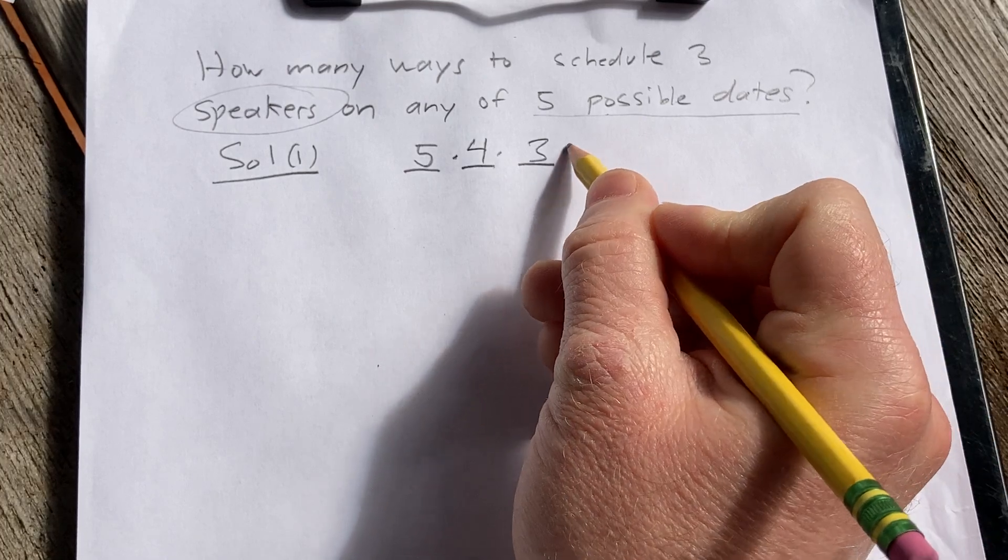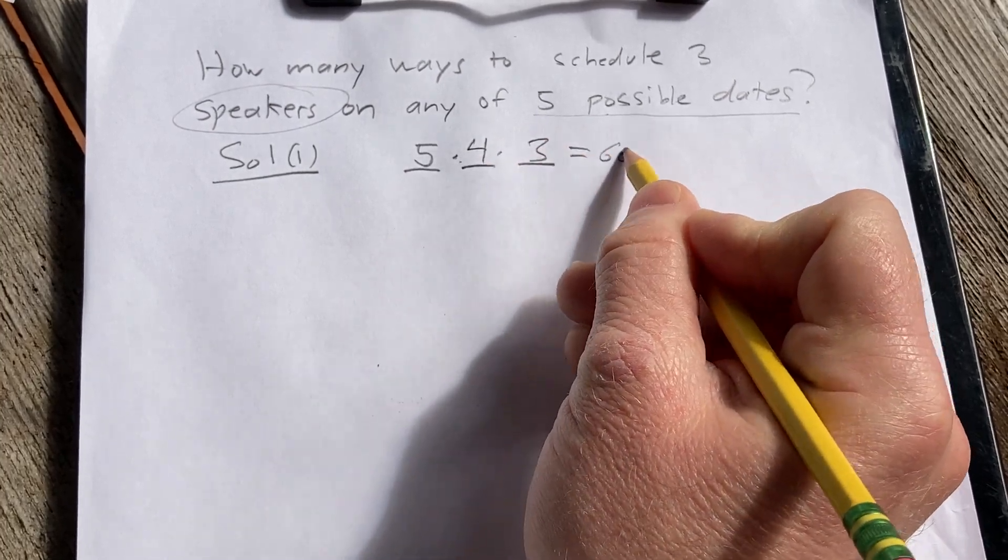So it'll be 5 times 4 times 3, which is 20 times 3, which is 60 ways.